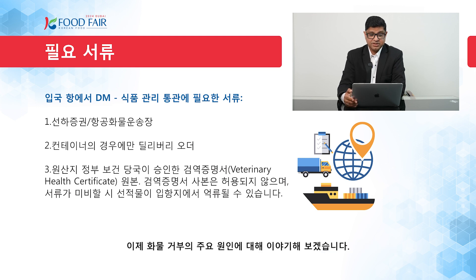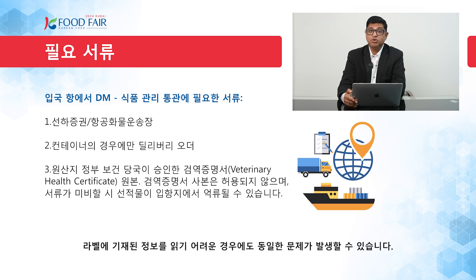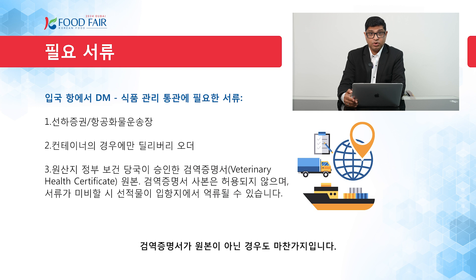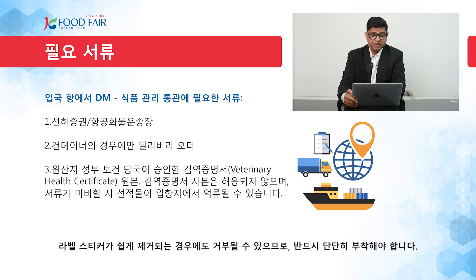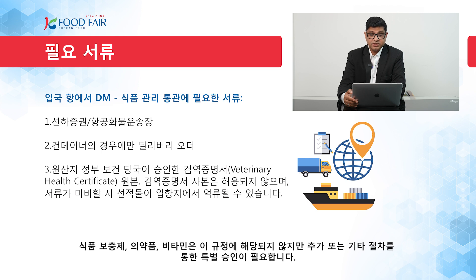Now let us talk about the main reasons for rejection of consignments. Any banned ingredients such as poppy seeds and alcohol may result in rejection. Difficult-to-read information on the label can also cause rejection. A health certificate that is not original is a reason for rejection. An easily removable sticker — the sticker must be firm, and if it is easily removable, it may cause rejection. Duplicated barcodes on the FIRS system will also cause rejection. Note that food supplements, medications, and vitamins do not fall under this regulation but require special approval by other authorities.